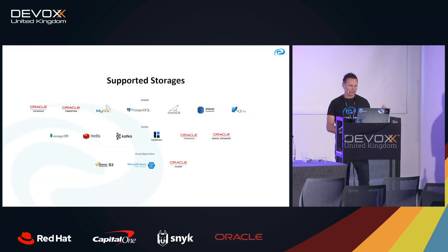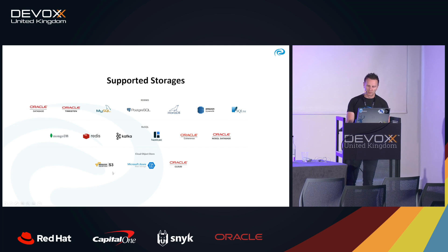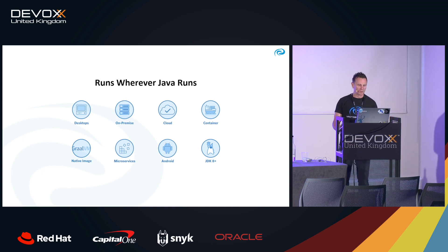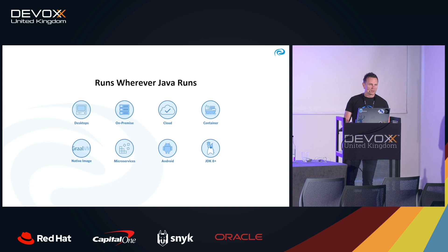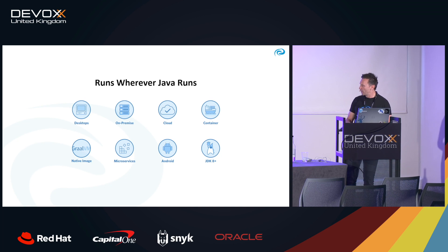You can choose your storage strategy — there are connectors for all major database systems, and you can also store objects in Kafka, Redis, or AWS S3 as a blob store. MicroStream is a Java library and runs wherever Java runs: desktops, servers, containers, and it works great with GraalVM native images, running seamlessly with native images. There is also an Android implementation, so you can run the same persistence library on Android devices. The only requirement is Java version 8.